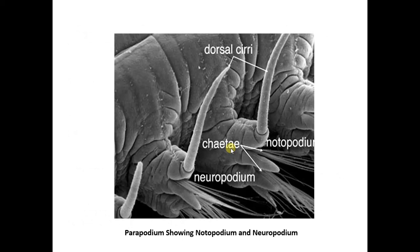This is a diagram of a typical parapodium. The parapodium has two parts: the dorsal one is the notopodium, and the ventral one is the neuropodium. The dorsal notopodium is used for respiration, so it has some cirri and gills. But the ventral one, the neuropodium, is used for locomotion because it has contact with the substrate.